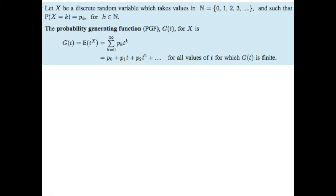Here is the definition of a probability generating function. The probability generating function g(t) for x is: g(t) equals the expected value of t to the x power. We know that the expected value is the probability of a specific value times t to that specific power — so it's the sum over k of P(X=k) times t to the k. Now, t refers to all values for which g(t) is finite.